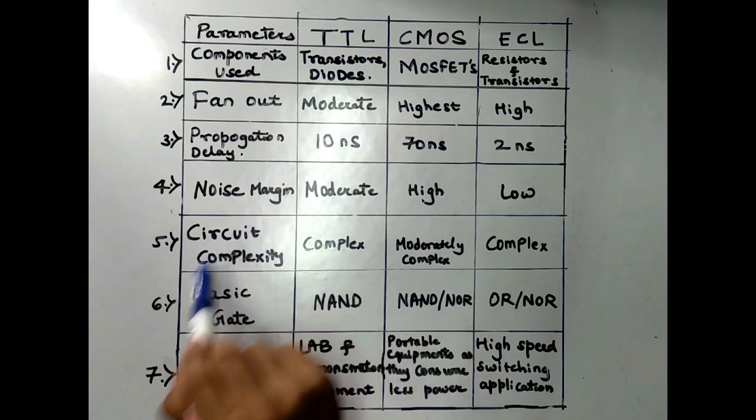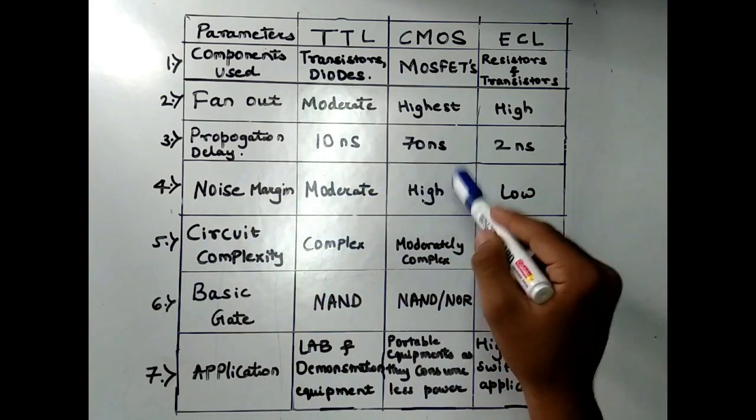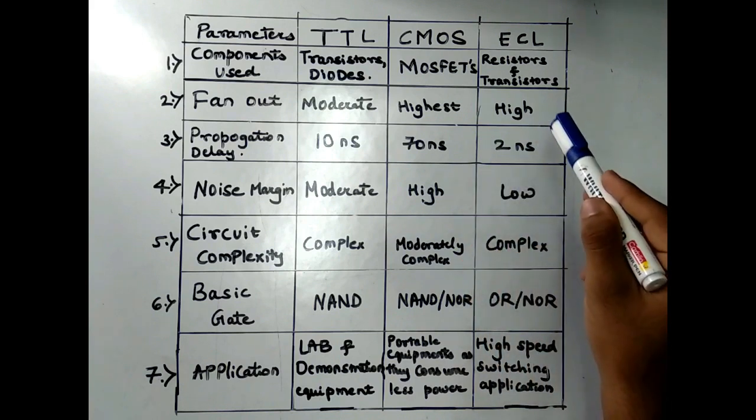The fourth parameter is Noise Margin. The noise margin of TTL is moderate, the noise margin of CMOS is high, and the noise margin of ECL is low.